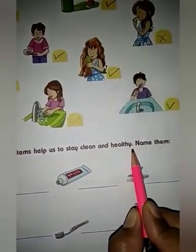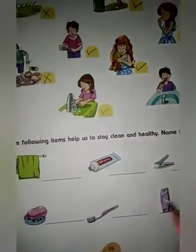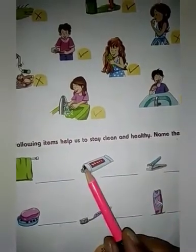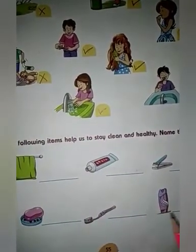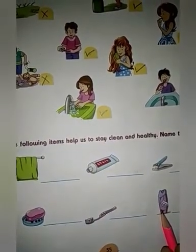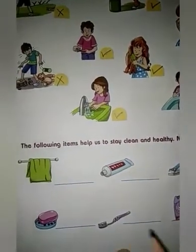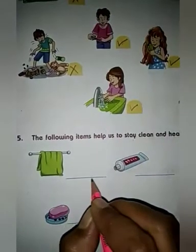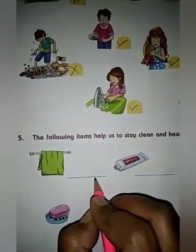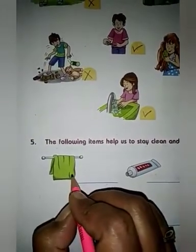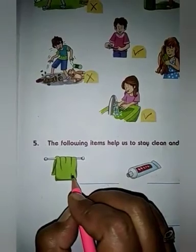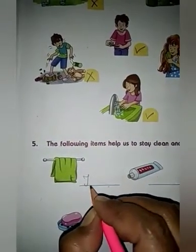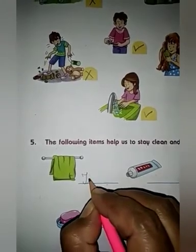Next, question number five: the following items help us to stay clean and healthy — name them. You can all see pictures of different things which we use to clean ourselves. We have to write their names in the given space. The first one is a picture of a towel, which we use to wipe our body.